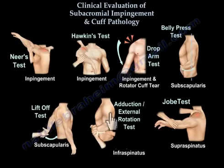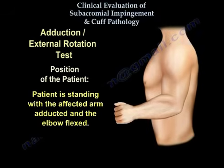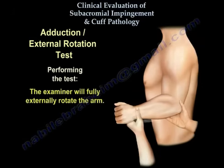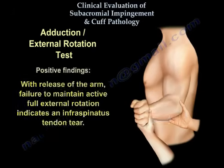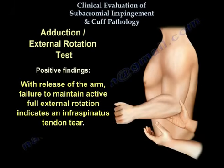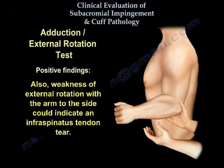The adduction external rotation test. The patient is standing with the affected arm adducted and the elbow flexed. The examiner will fully externally rotate the arm. With the release of the arm, failure to maintain active full external rotation indicates an infraspinatus tendon tear. Also, weakness of external rotation with the arm to the side could indicate an infraspinatus tendon tear.